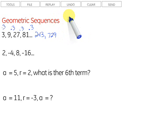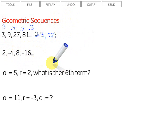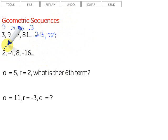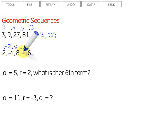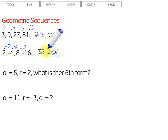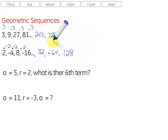It's only geometric if we multiply by the same thing to get from one term to the next. Let's take a look at this sequence: 2, negative 4, 8, negative 16. That one looks a little confusing, but 2 times negative 2 gets me negative 4. Then negative 4 times negative 2 gets me a positive 8 again. So we're multiplying by negative 2 to get from one term to the next. Then negative 16 times negative 2 gives us 32, and 32 times negative 2 gives negative 64, and negative 64 times negative 2 gives 128, and so on. Two examples of geometric sequences.